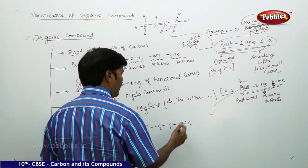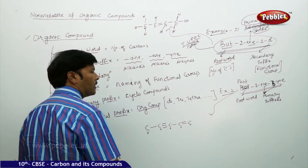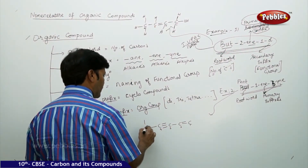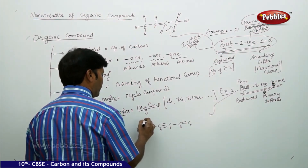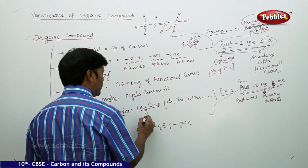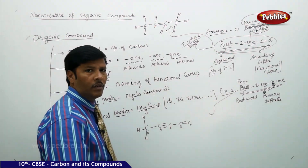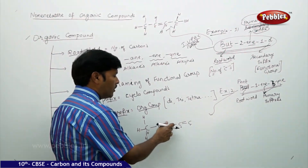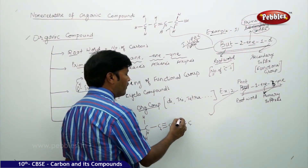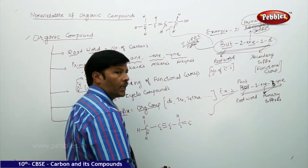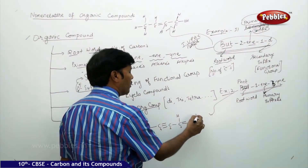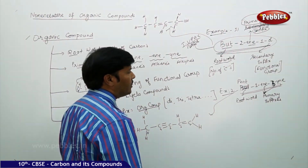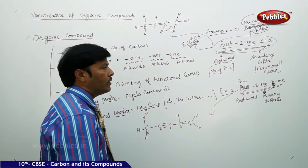For pent-1-en-3-yne, take one double bond at position 1 and one triple bond after the third carbon. The root word is 'pent' (five carbons). Satisfy the tetravalences: for the fifth carbon, attach single bond hydrogen; the fourth and third carbons already have four covalent bonds (triple bond); the second carbon has only three bonds, so attach single bond hydrogen; and single bond hydrogens for the first carbon as well. This is the structural formula for pent-1-en-3-yne.